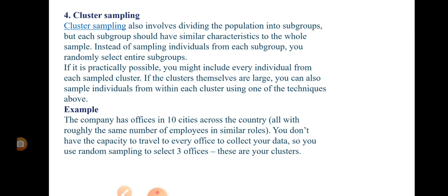This is cluster sampling combined with random sampling. The clusters — the offices in 10 cities — are already divided. You have not created these divisions yourself. You only randomly select 3 offices from the 10 and collect your data from those 3 offices. The clusters are already there; you simply choose randomly among them.